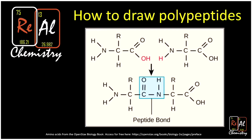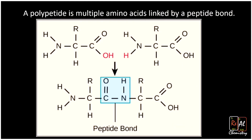What is up everyone? Today on this episode of Real Chemistry we're going to learn how to draw polypeptides. First up, what's a polypeptide? Well, a polypeptide is multiple amino acids linked together by a peptide bond.